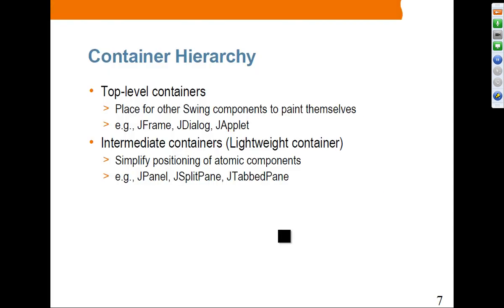There are two types of containers. Top-level containers are the places for other Swing components to paint themselves. Java provides three top-level containers: JFrame, JDialog, and JApplet. For desktop applications, we are typically dealing with JFrame. Then there are intermediate containers — also called lightweight containers — which provide simplicity for positioning of atomic components. You can apply a layout manager to these intermediate containers. JPanel is probably the most popular intermediate container, along with JSplitPane and JTabbedPane.